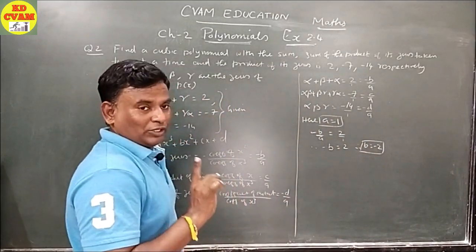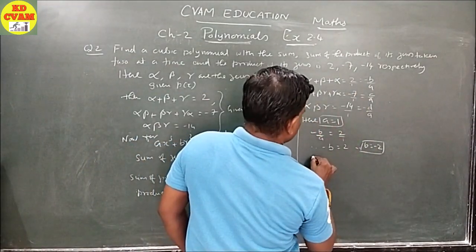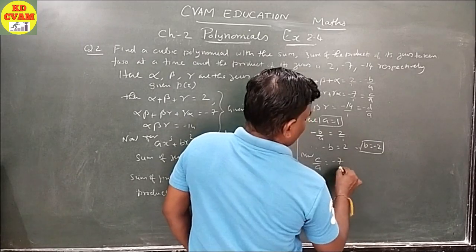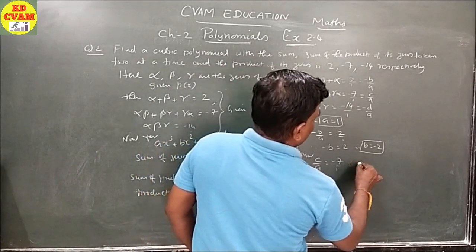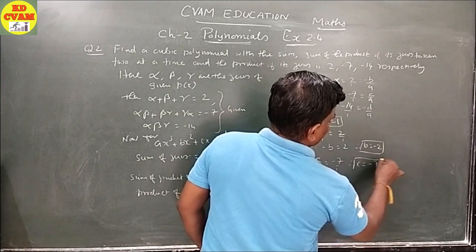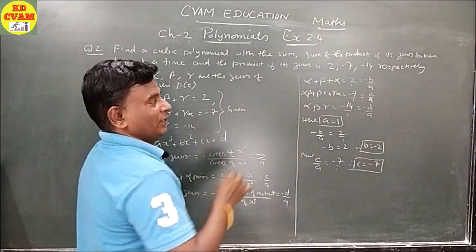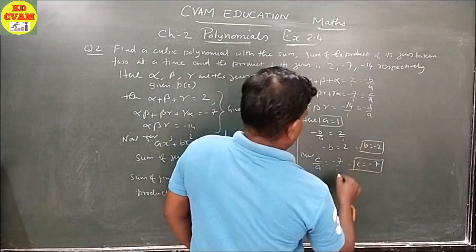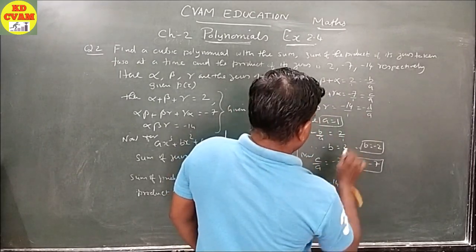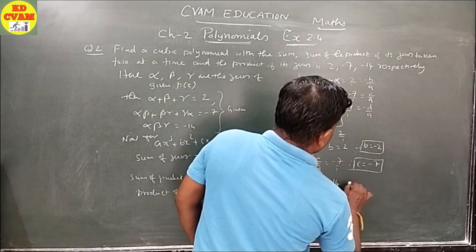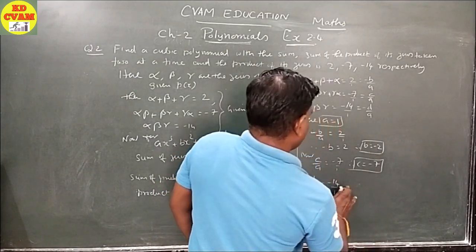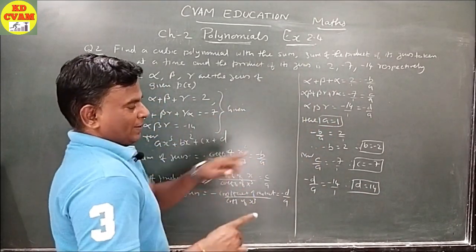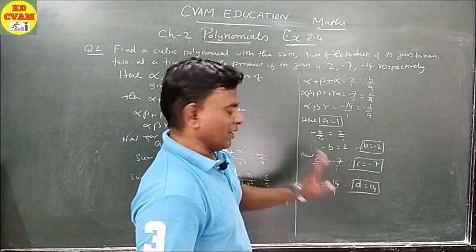C/A = -7, and A = 1, therefore C = -7. For the product: -D/A = -14, so -D = -14, therefore D = 14. So A = 1, B = -2, C = -7, D = 14.